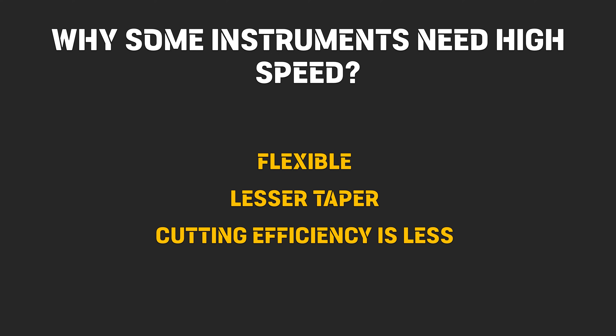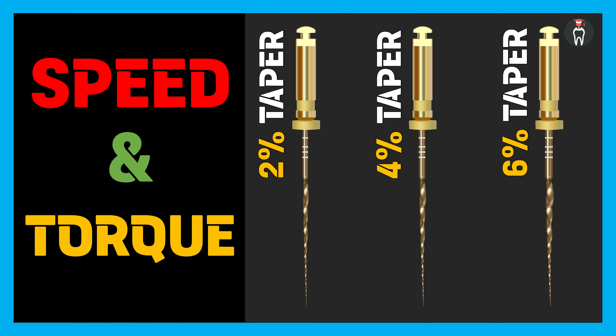Before concluding: whenever the instrument is flexible, reduce the torque and increase the speed; the opposite applies for rigid instruments. And whenever you are preparing a root canal which is calcified, narrow, or curved, it is better to use a flexible instrument and reduce both the torque and the speed. That's all for this video. Stay tuned, have a nice day, and thank you for watching.